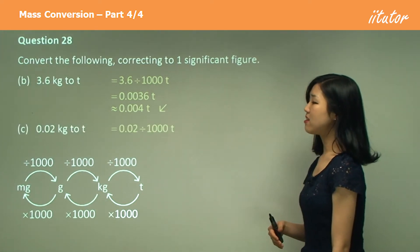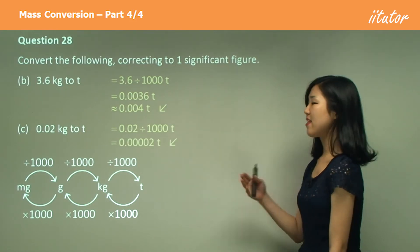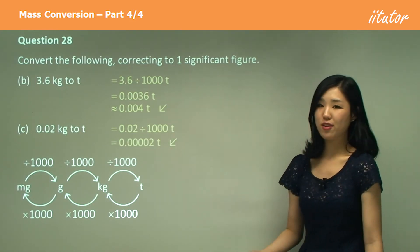And C, again, divide by a thousand. You're going to get a lot of zeros and that's already in one significant figure, so I don't have to do anything else.